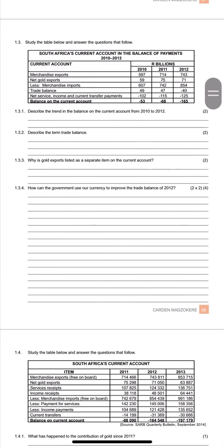Study the table below and answer the questions that follow. We have BOP here — current account. Just know all your accounts. There's a lot that we don't have here. Maybe the main focus is trade balance because the other things removed have nothing to do with the trade balance — things like service receipts, income payments, and all that. See how you can do this one.